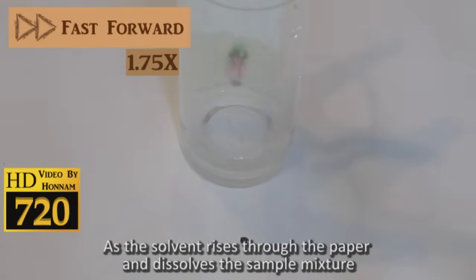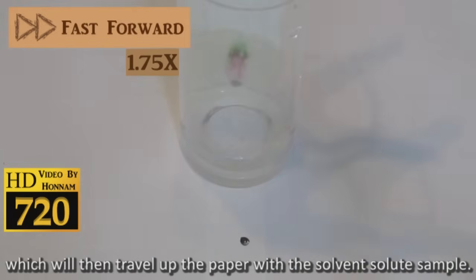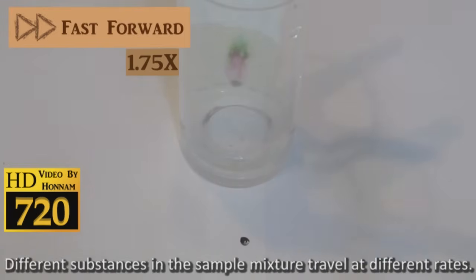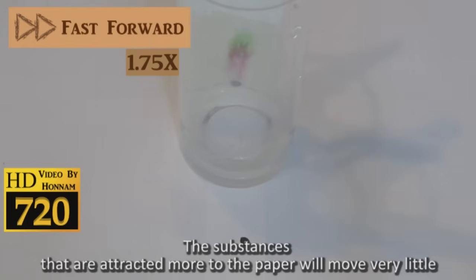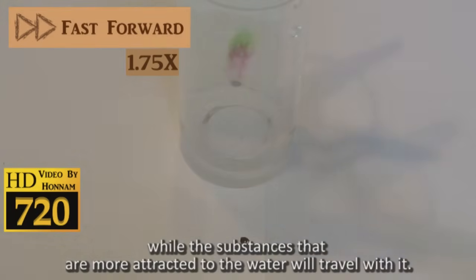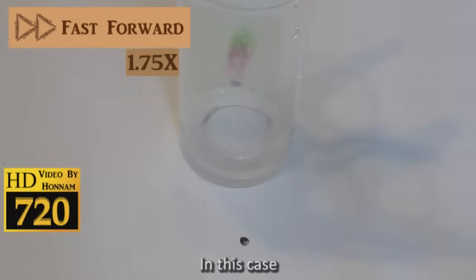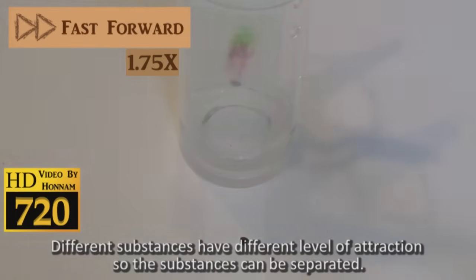As the solvent rises through the paper, it dissolves the sample mixture which then travels up the paper with the solvent. Different substances in the sample mixture travel at different rates. Paper is composed of cellulose, which is a polar substance. The substances that are attracted more to the paper will move very little, while the substances that are more attracted to the water will travel with it. In this case, different substances have different levels of attraction, so the substances can be separated.